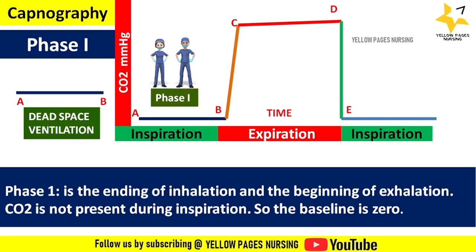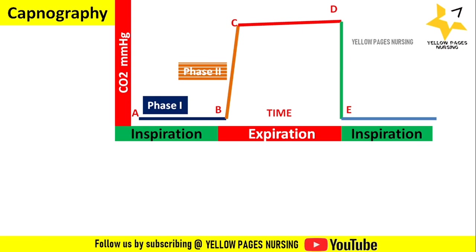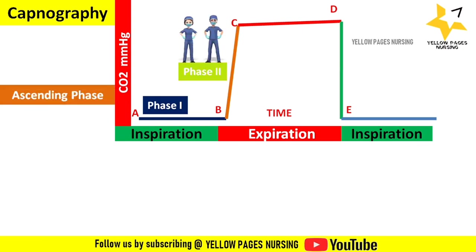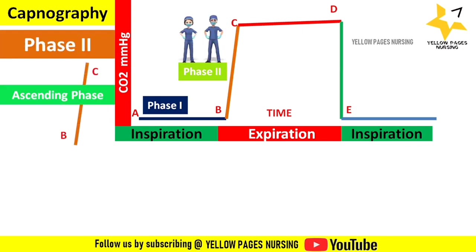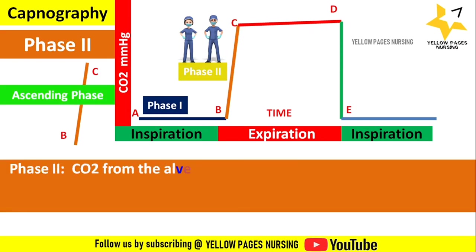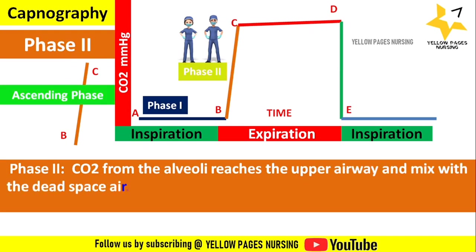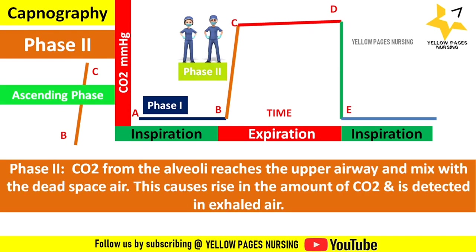Next comes phase 2, which is from B to C, called the ascending phase. In phase 2, carbon dioxide from the alveoli reaches the upper airway and mixes with the dead space air. This causes a rise in the amount of carbon dioxide, which is detected in the exhaled air.